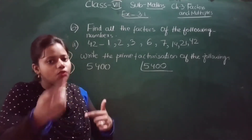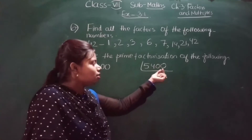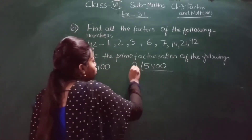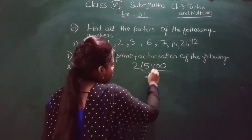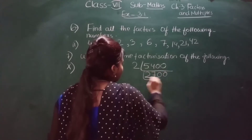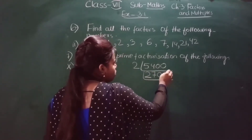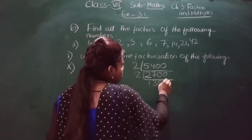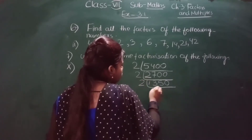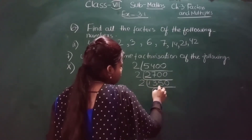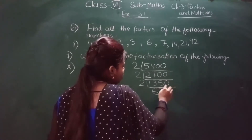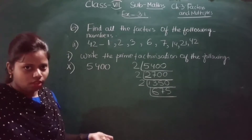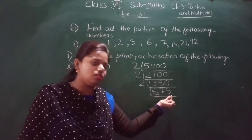We check divisibility by 2 first — since the units digit is 0, it divides by 2. Dividing step by step: 5400 ÷ 2 = 2700, ÷ 2 = 1350, ÷ 2 = 675. Now 675 ends in 5, so it will not divide by 2. We move to 3. Adding digits of 675: 6 + 7 + 5 = 18, which is divisible by 3.